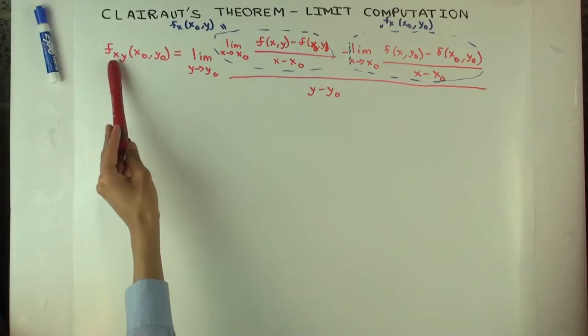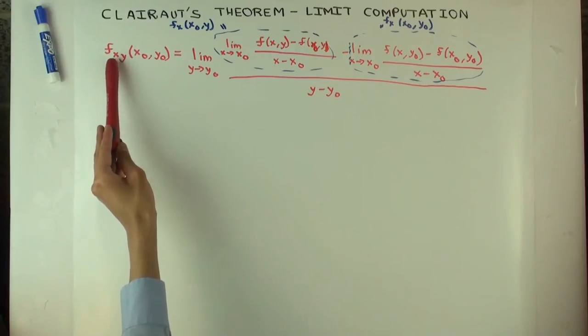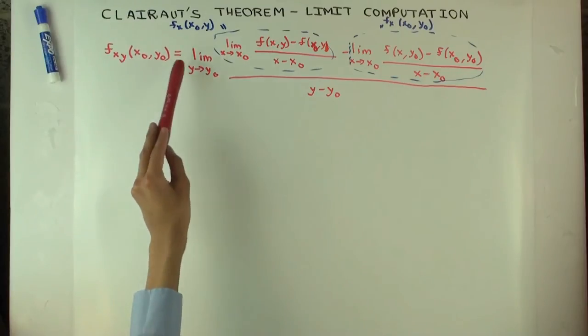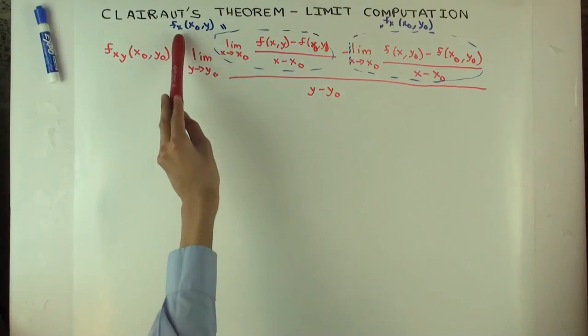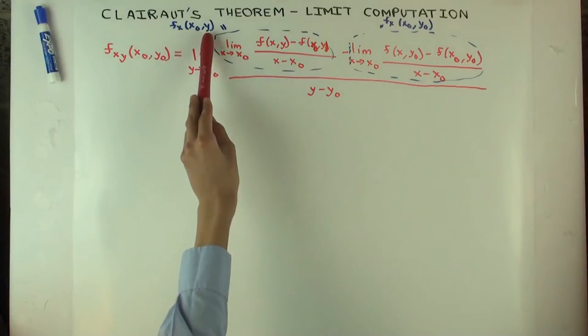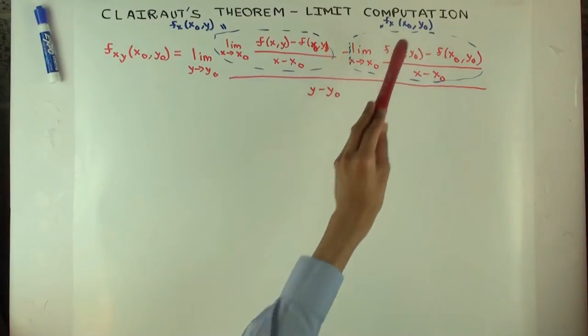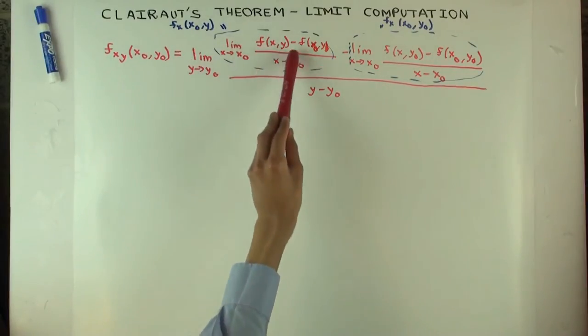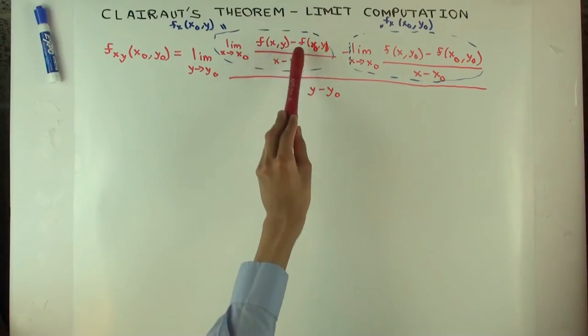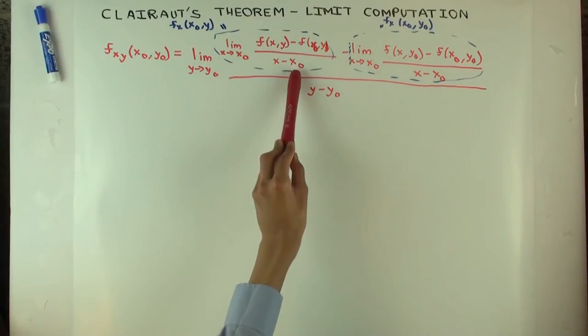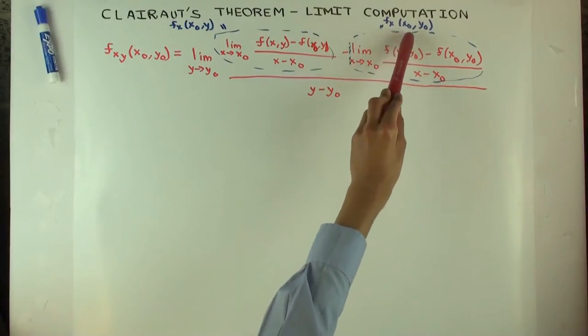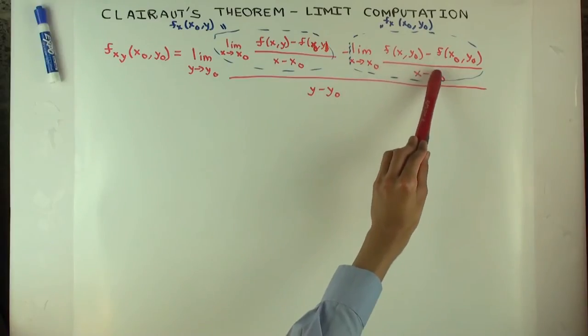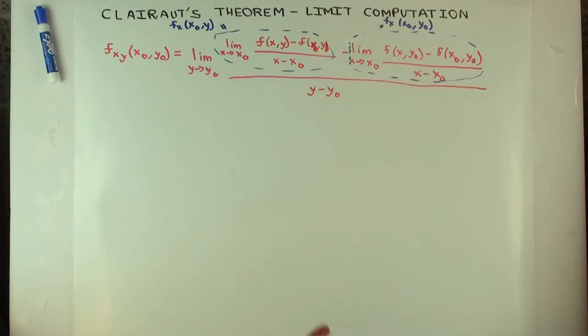So this is f sub x differentiated with respect to y. The partial derivative of f sub x with respect to y, that's limit as y approaches y naught, of f sub x of x naught comma y minus f sub x of x naught comma y naught over y minus y naught. f sub x of x naught comma y can be rewritten like this, f of x comma y minus f of x naught comma y over x minus x naught. And f sub x of x naught comma y naught can be rewritten like this, f of x y naught minus f of x naught y naught over x minus x naught.